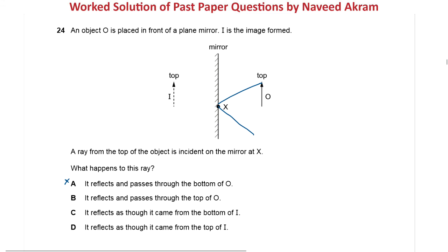Option C says it reflects as if it came from the bottom of I — but the ray is coming from the top, so it would not reflect as if from the bottom of I. Option D says it reflects as if it came from the top of I — this is the right answer, because the reflected ray appears to come from the top of the image I. The answer is option D.